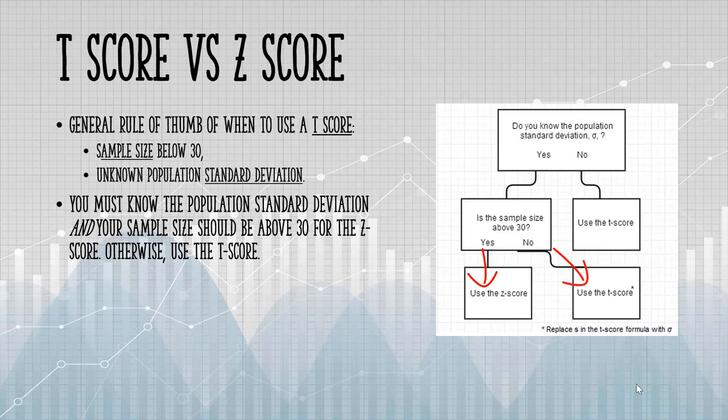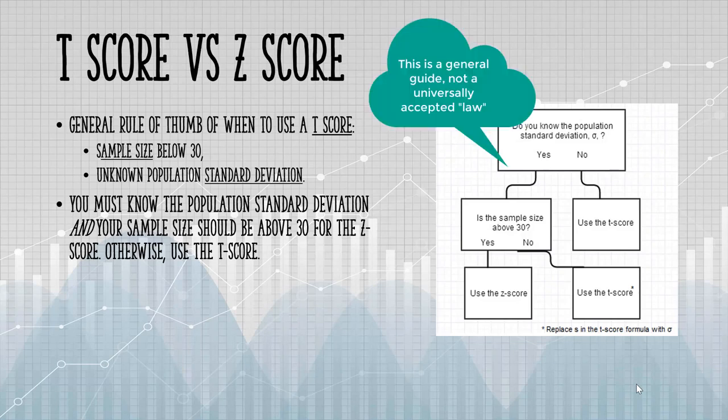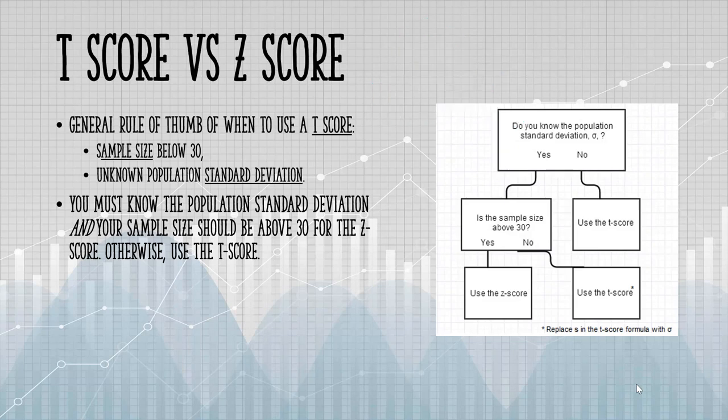Notice I've been using words like should and want to and rule of thumb. That's because there isn't a universal rule for when to use a T-score. In most cases, this chart will be sufficient, but there are dozens of textbooks who have slightly different interpretations of the rule of thumb, so you'll want to check with those to make sure they're not suggesting something different.